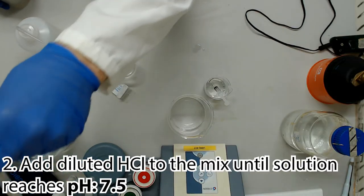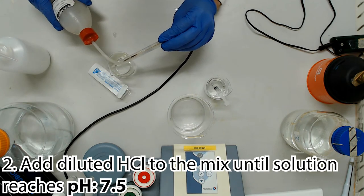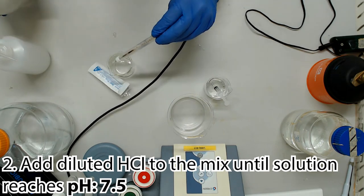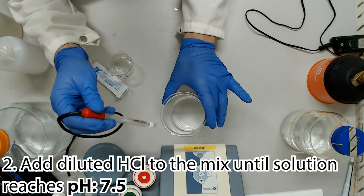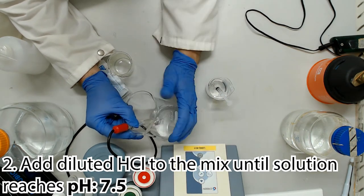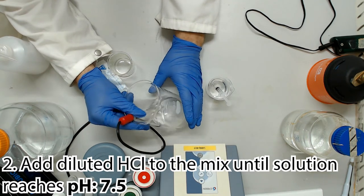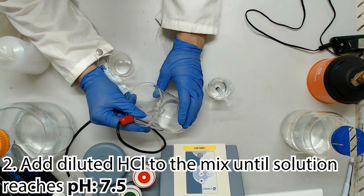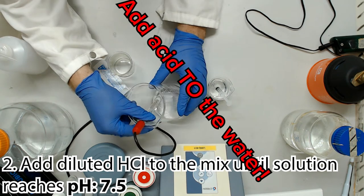We'll next adjust the pH down to 7.5 using diluted hydrochloric acid, adding a tiny bit of Trisbase if we overshoot. I know I'm starting to probably sound like a broken record player to those following along the series in order, but if this is the first video you're watching from us, let me throw in a gentle reminder about diluting your hydrochloric acid. Add the acid to the water.